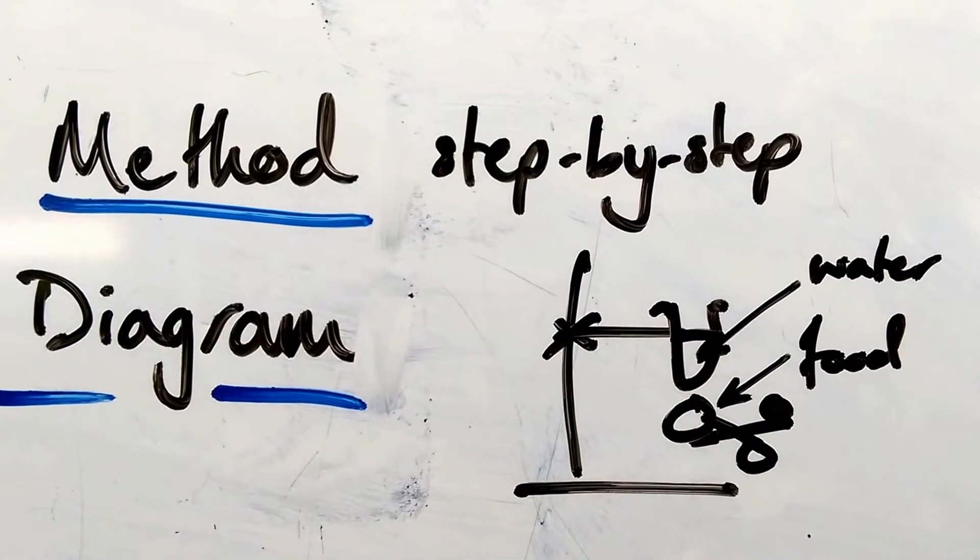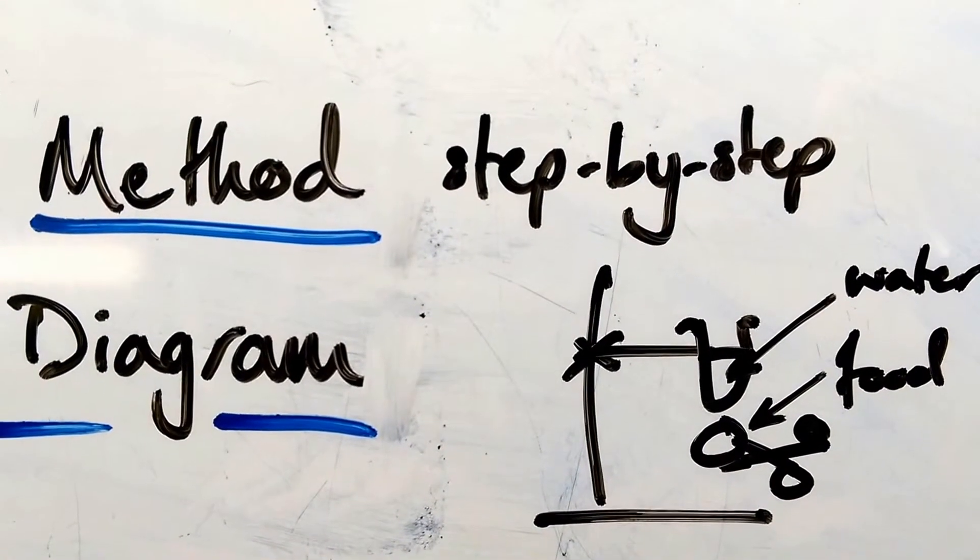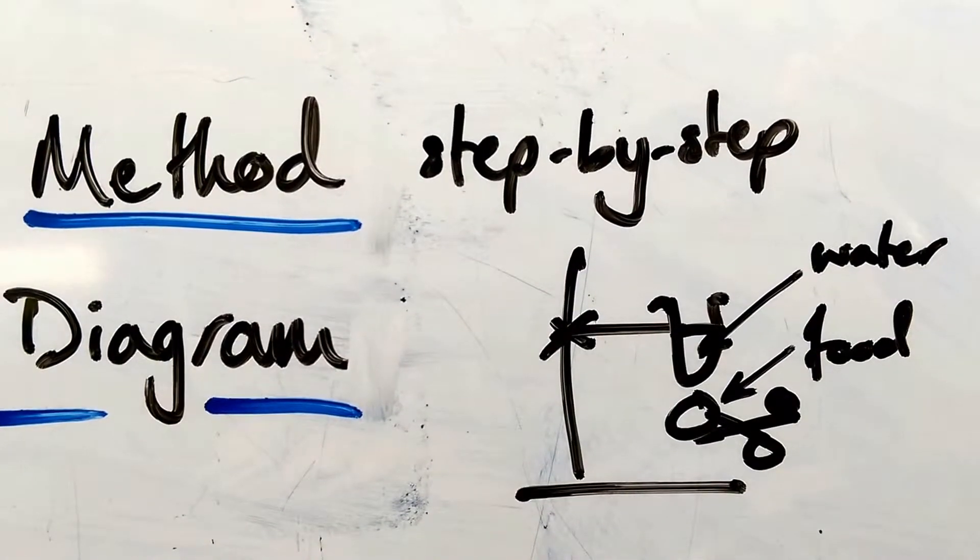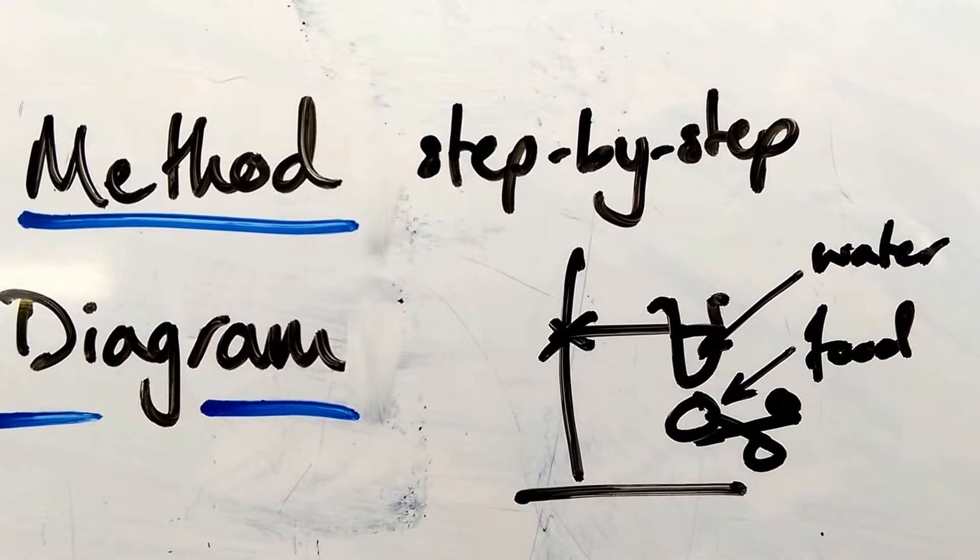What's next? We need to write a method. It needs to be simple. As simple as possible. Step by step, preferably. So that anybody could follow it. And anyone could check what you've done.